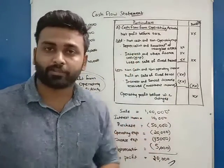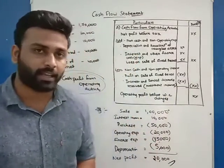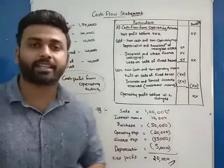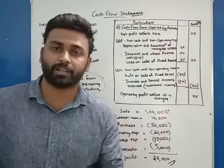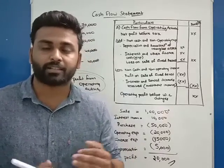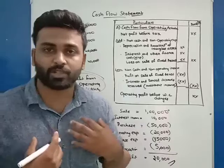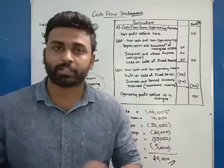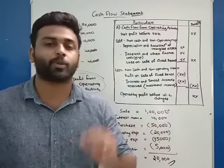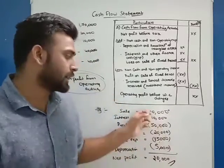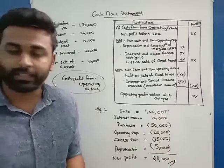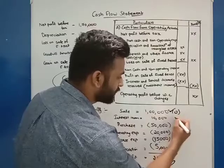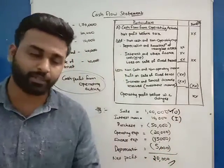Suppose the sale of the business is 1 lakh — that is an operating activity. Then, interest income from investment activities — meaning we receive interest when we invest somewhere — that is 10,000. So the total revenue of the business is 1 lakh plus 10,000, which is 1 lakh 10,000. Of that, 1 lakh is operating activity and the interest income is an investing activity.